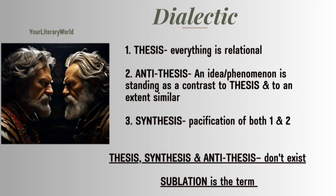Although thesis, antithesis, and synthesis are the commonly taught stages of Hegel's dialectic, these three terms do not actually occur in Hegel's philosophy — it is a mistranslation or oversimplification of Hegel. There is another term known as 'sublation,' which those who have studied Hegel deeply usually know. Sublation holds three different characteristics, unlike synthesis which is only a fusion. I mention this so you know the simplified version is not the full truth.